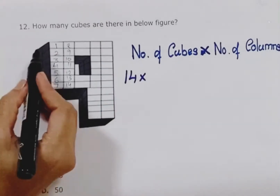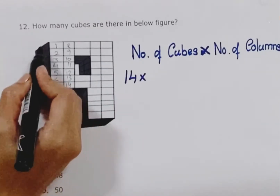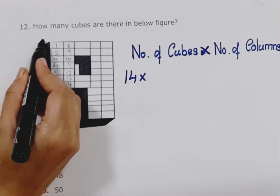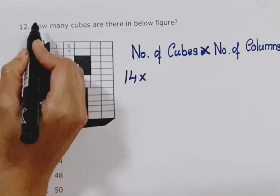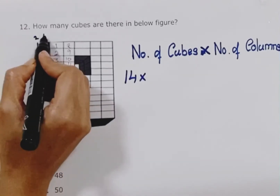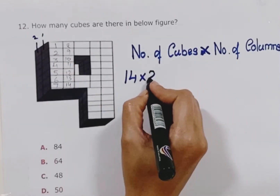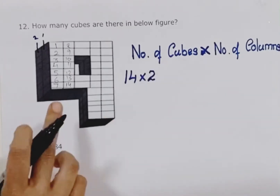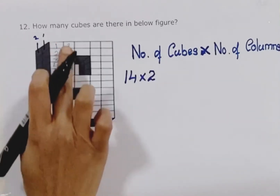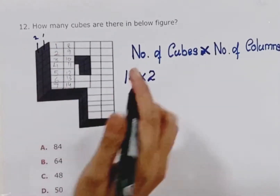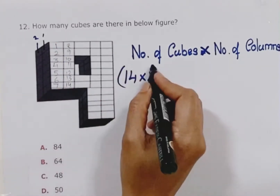How many columns are there? Counting: 1, 2 — so there are 2 columns. Multiply the small cubes: 14 cubes in 2 columns, so multiply with that.